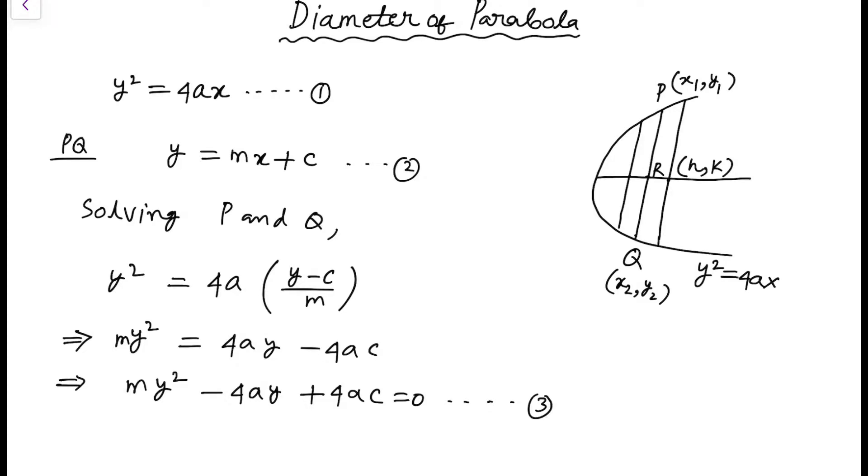This is a quadratic equation in Y. So this has two roots, say Y₁ and Y₂. Then sum of the roots Y₁ plus Y₂ will be 4A by M.